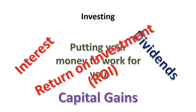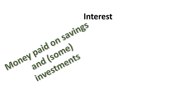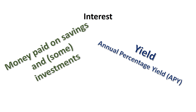They all have some kind of return on investment, known as ROI, and it's normally measured as a percentage of the investment — what actually gets returned on top of the original investment, as in a sense profit. Interest is simply money that you're being paid either on savings or in some cases on investments, and it is calculated as what is referred to as a yield.